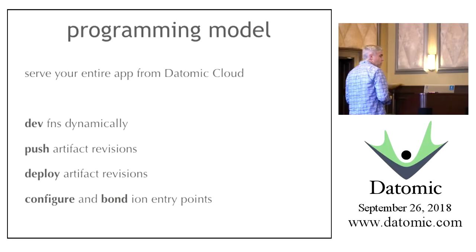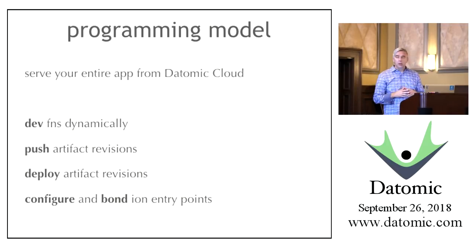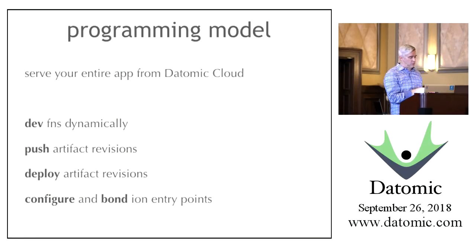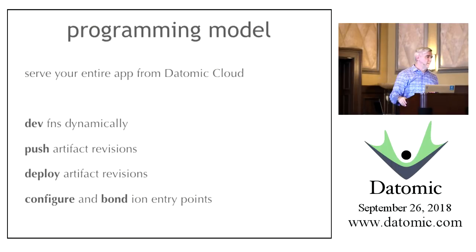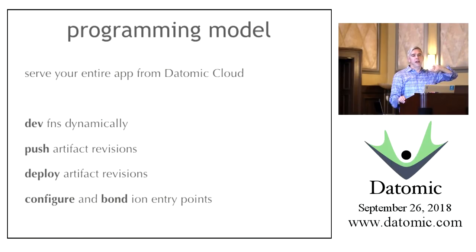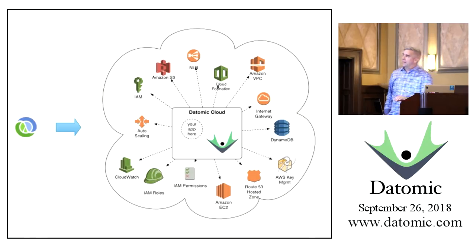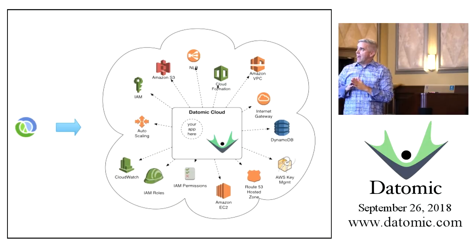That's where we're headed—this programming model where you serve your entire application from Datomic Cloud. You develop functions dynamically at the REPL, push artifact revisions, deploy those revisions, and then configure. The Ion config is in an edn file. Having developed Datomic Cloud, we solved all the problems about interacting with AWS. People who wanted to write applications were standing on the outside feeling sad, because they have all the same problems—their programs need to run on AWS too.